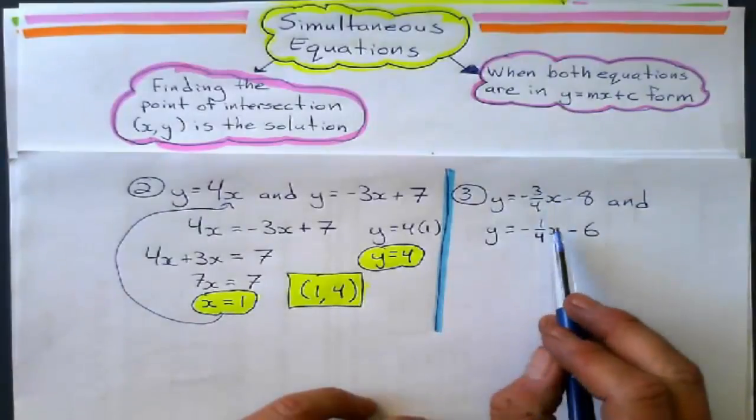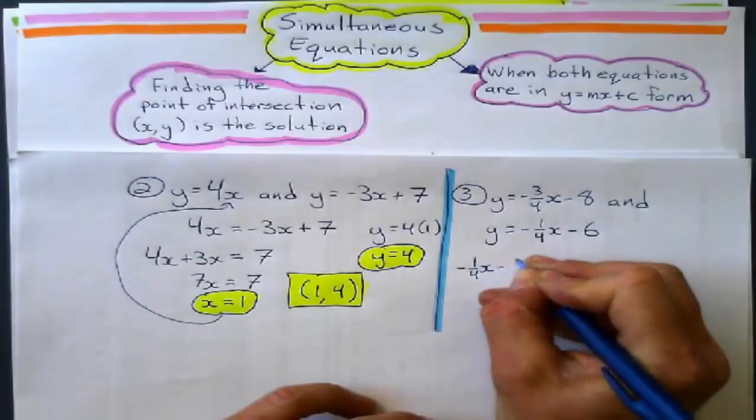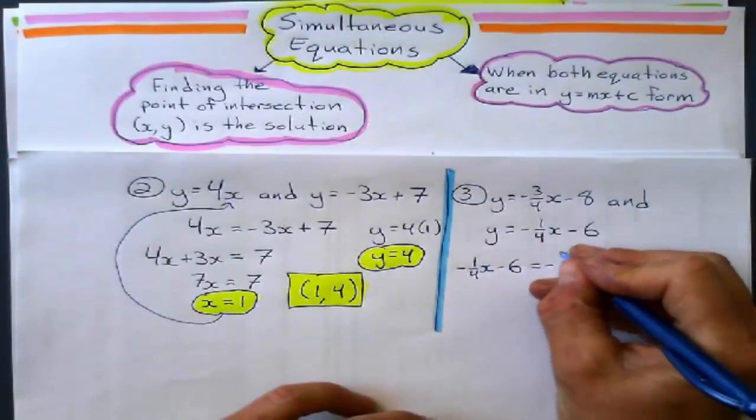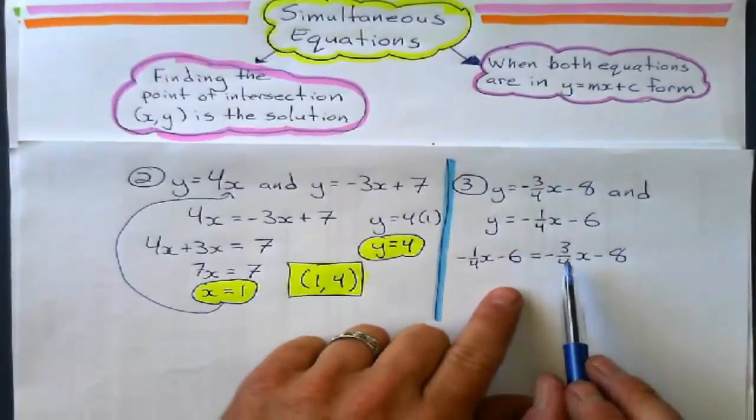Next example. Fractions. That's okay. Life's not perfect. So, set the two expressions equal to each other first. Leaving out the y, of course.